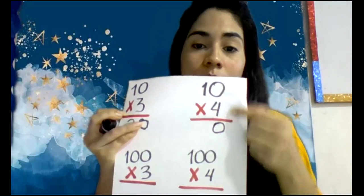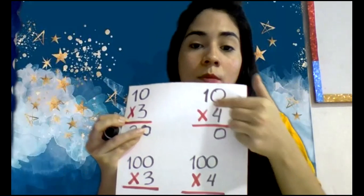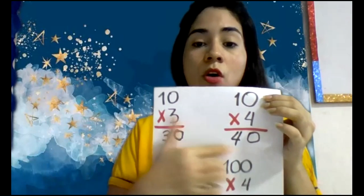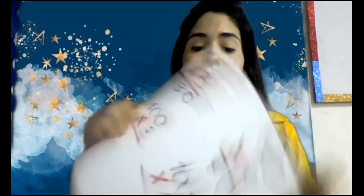Four by zero, zero. Four by one, four. So these are examples of multiples of 10.